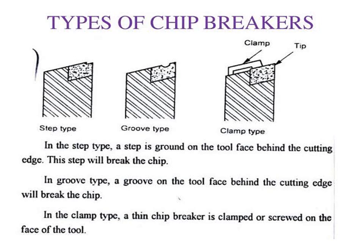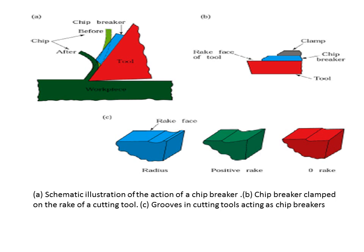A thin chip breaker is clamped or screwed on the face of the tool. This is a schematic illustration of the action of a chip breaker showing how it controls chip flow by bending and breaking the chip.